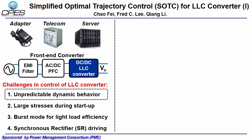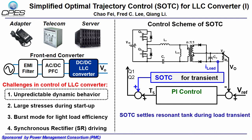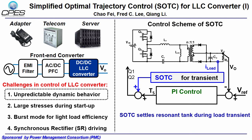In this video nugget, I will focus on unpredictable dynamic behavior. Simplified optimal trajectory control (SOTC) is proposed to solve these challenges. There are two control loops in the system: SOTC is used to settle the resonant tank during load transient, and PI control is used to eliminate the small steady-state error.